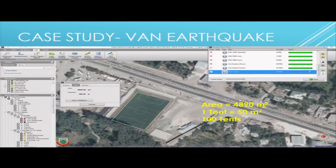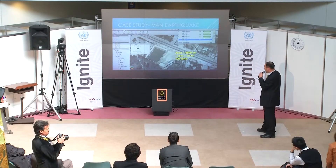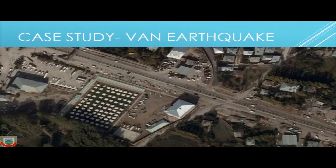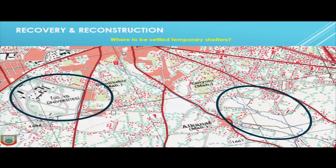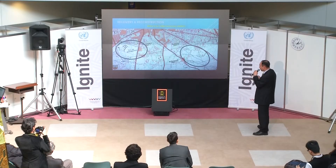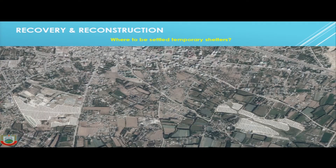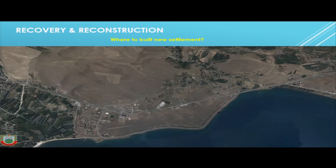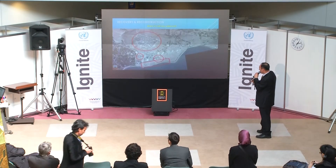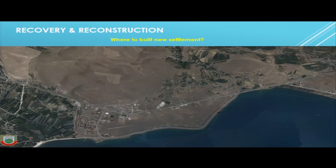Using simple geographic analysis, each tent on the football pitch covers approximately 50 square meters, allowing approximately 1,010 tents to be placed. In the recovery and reconstruction phase, analysis was conducted on how and where to settle temporary shelters. Two main areas were identified, and before-and-after comparisons show the changes clearly. Similarly, geospatial analysis was used to determine where to build new permanent settlements, with before-and-after imagery showing the transformation.